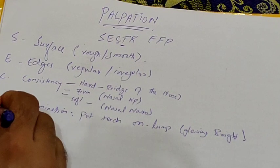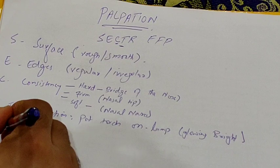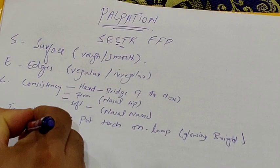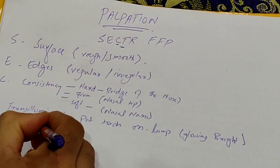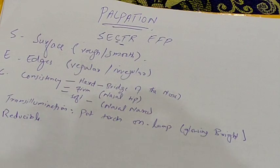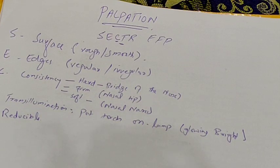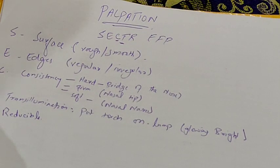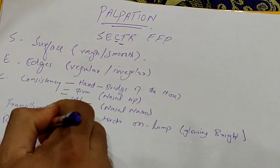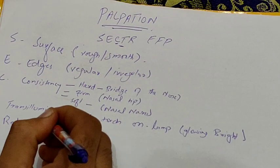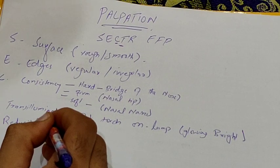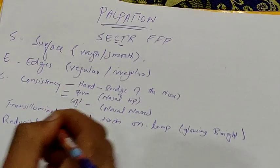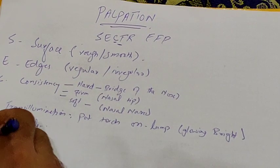R stands for reducibility. Always ask the patient to reduce the lump first, because they know how to do it. If they can reduce it, that's good. If they cannot, then you try — tell the patient you are attempting to reduce it yourself.